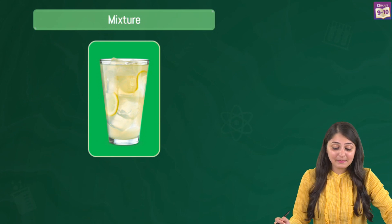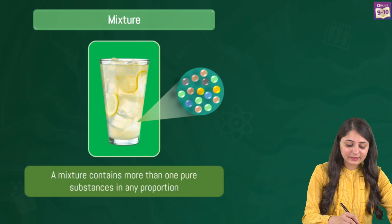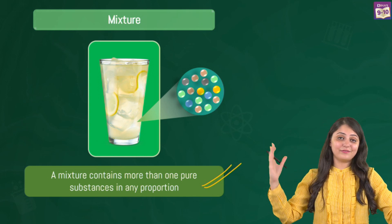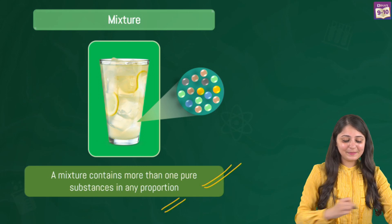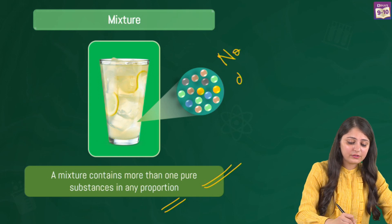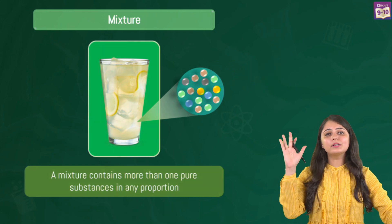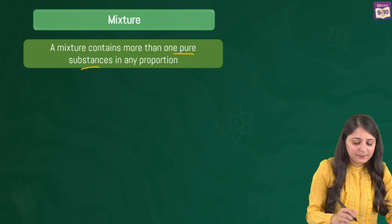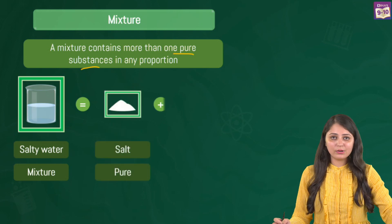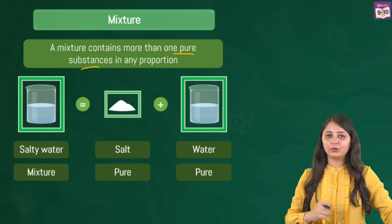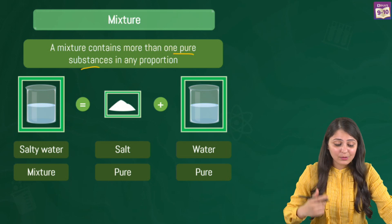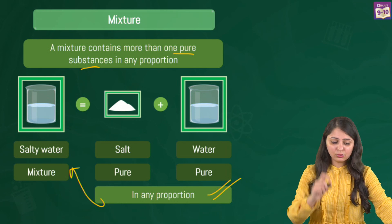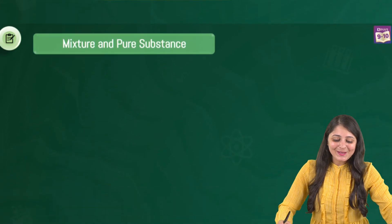Coming to another example — lemonade. Clearly the substances are being mixed together in any proportion. If you make a lemonade it will be different from if I make one, or any of our friends make one. So no definite composition is there — that is a very important point. Similarly, salty water is formed by adding salt to water; everyone adds salt in different amounts. So yes, constituents are added in any proportion to make a mixture, even though salt and water individually are pure substances.